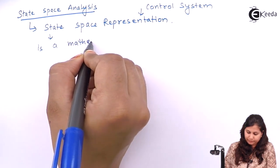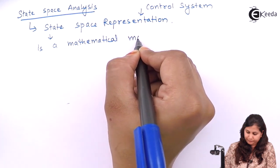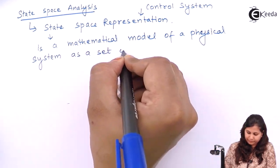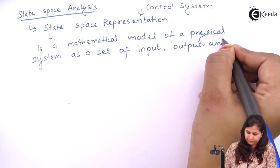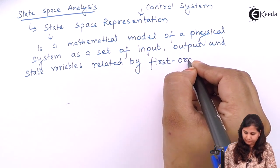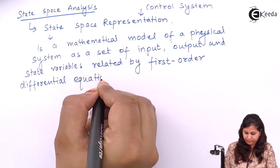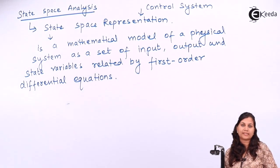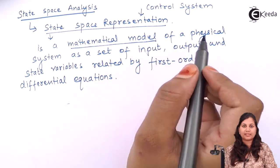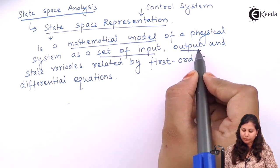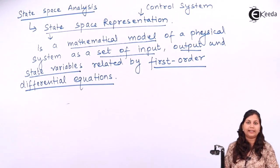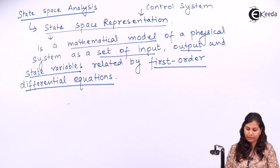The state space representation is a mathematical model of a physical system. In state space representation, the mathematical model consists of a set of input, output, and state variables, and these variables are related by first-order differential equations. This is the basic idea behind the state space representation.